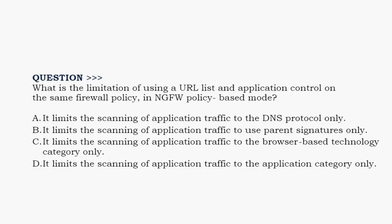Next question: What is the limitation of using a URL list and application control on the same firewall policy in NGFW policy-based mode? Option A: It limits the scanning of application traffic to the DNS protocol only. Option B: It limits the scanning of application traffic to use parent signatures only. Option C: It limits the scanning of application traffic to the browser-based technology category only. Option D: It limits the scanning of application traffic to the application category only. The correct answer is Option D.